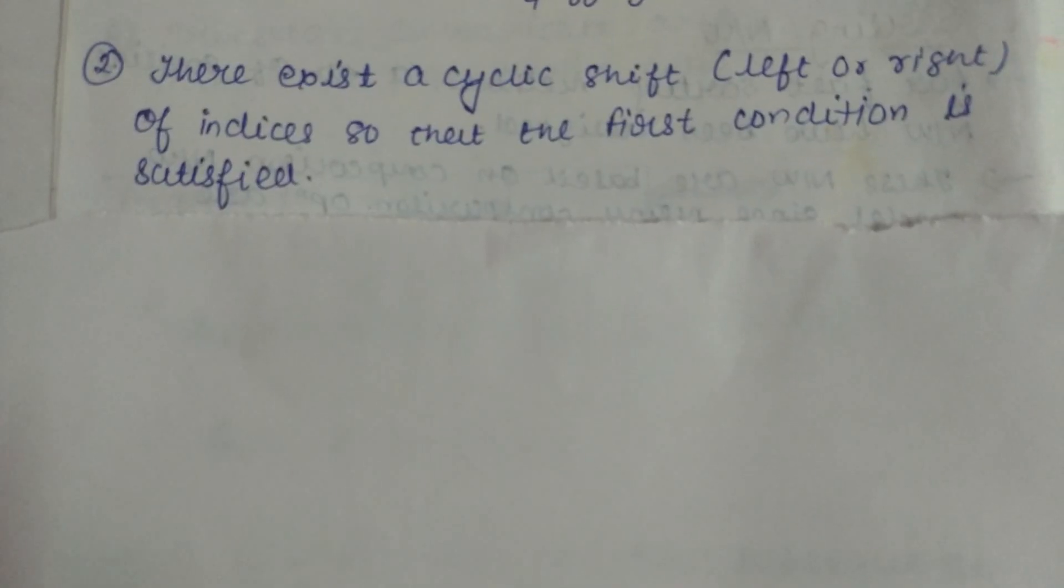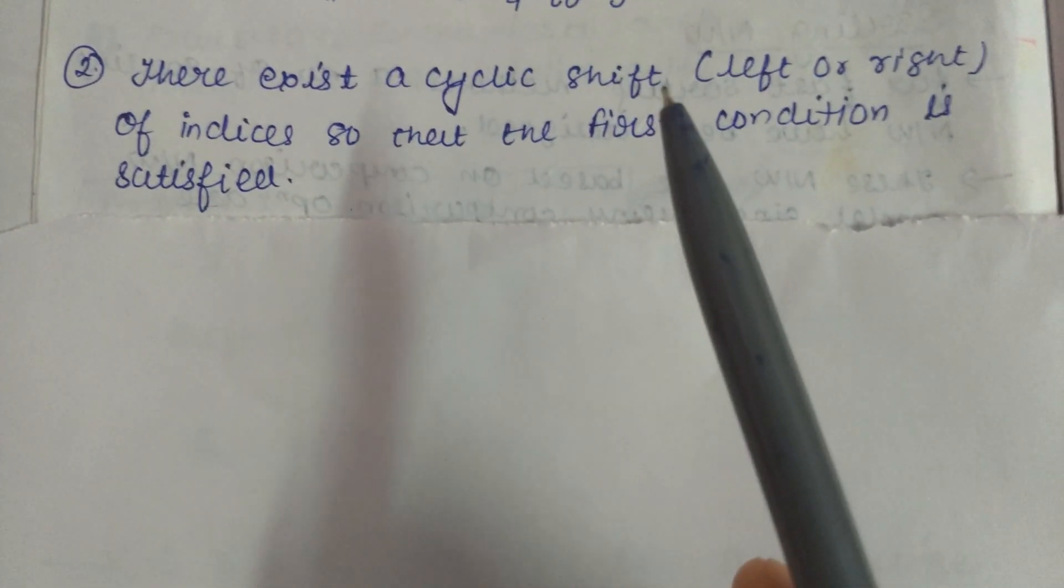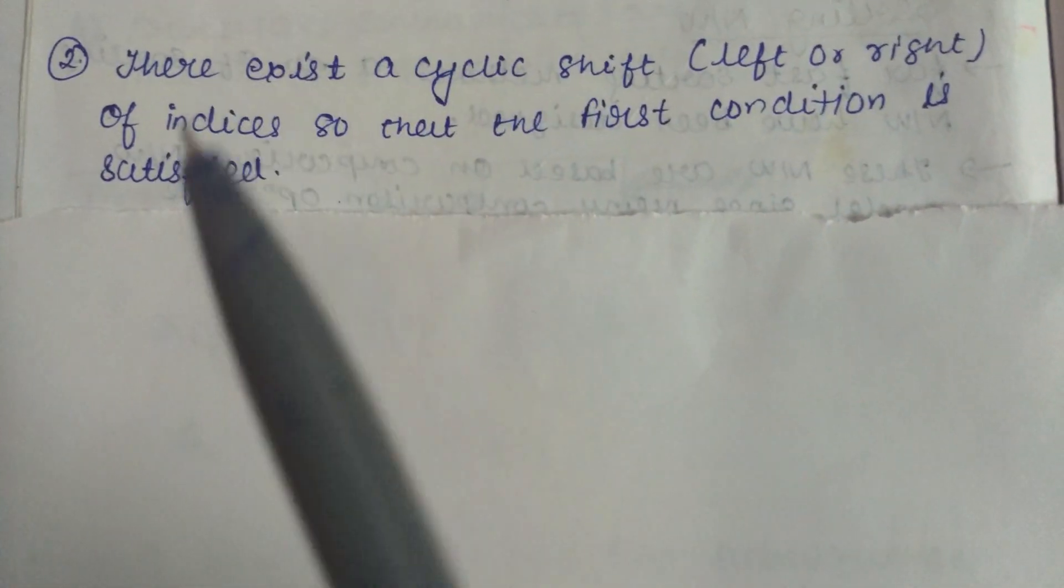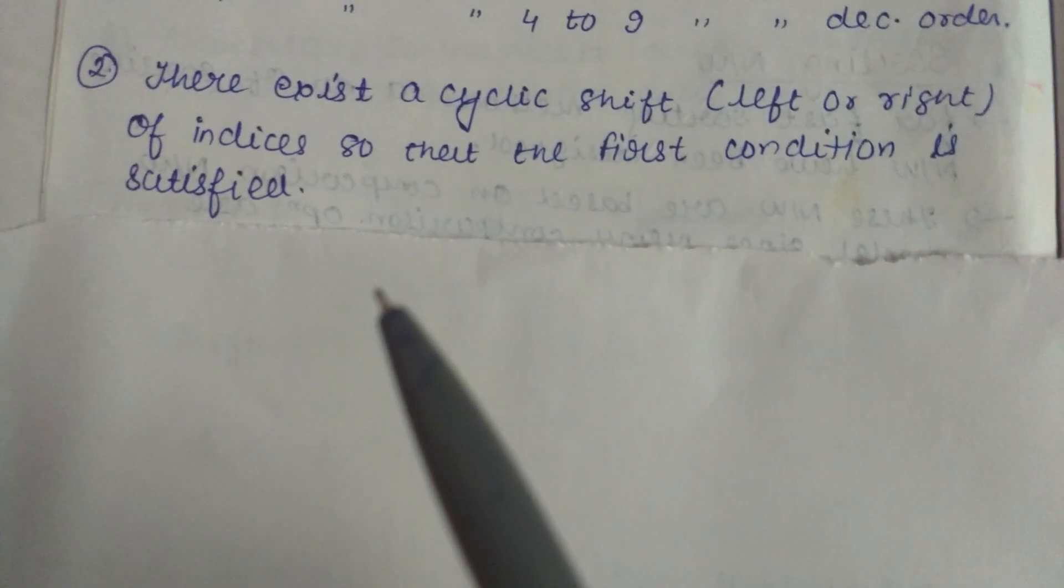And the second property says there exists a cyclic shift left or right of indices so that the first condition is satisfied. So let's take an example.